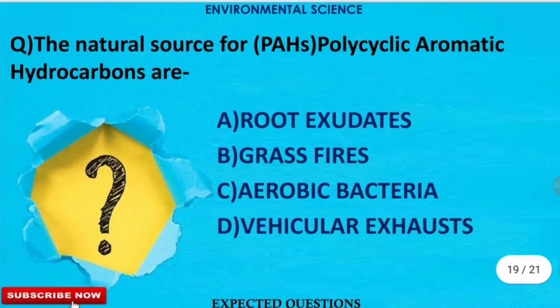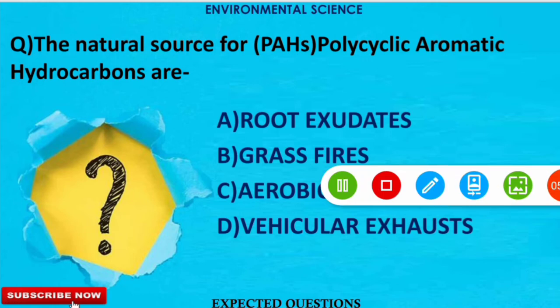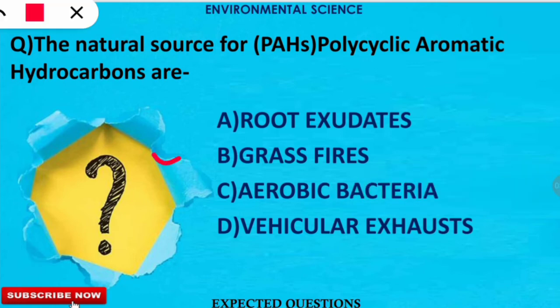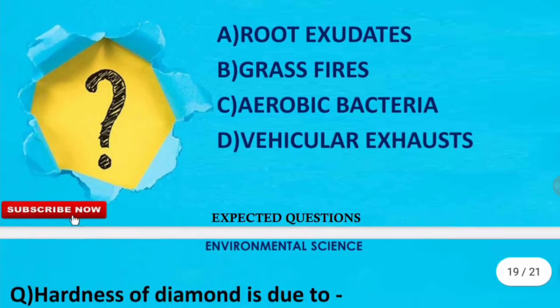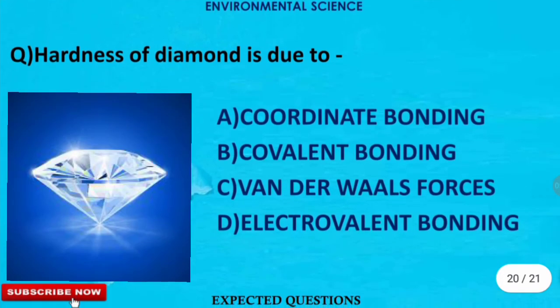The next question is: the natural sources of PAHs (polycyclic aromatic hydrocarbons) are which of the following? The correct option is option B — as grass burns due to grass fires, PAHs are released into the atmosphere.